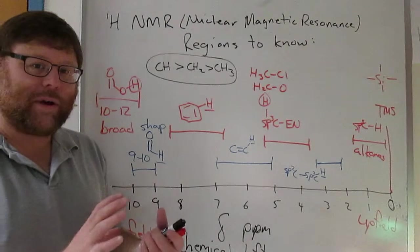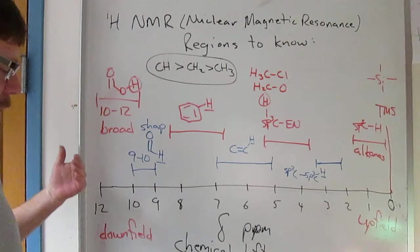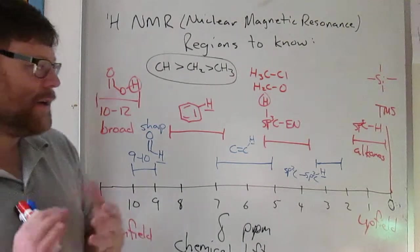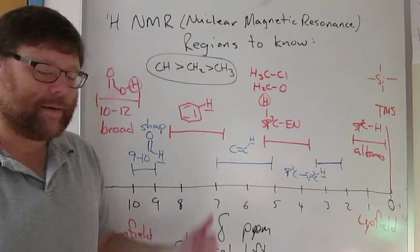The more electron withdrawing stuff, the more electron density you pull away from a proton, the farther downfield to the left it will appear. The more electron density you push toward a proton, the farther upfield it will appear.